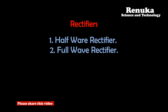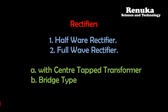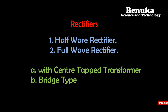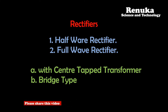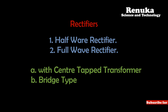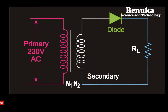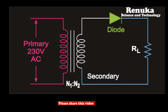The full wave rectifier is again classified into two types: full wave rectifier using a center tap transformer, and full wave rectifier using a bridge type connection. In a half wave rectifier, the output current flows only for half a cycle, so only half the wave is obtained at the output — hence it is called a half wave rectifier.